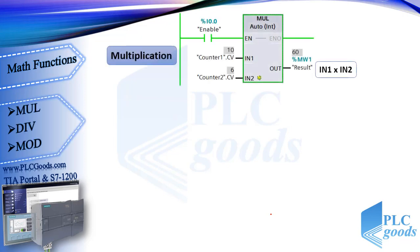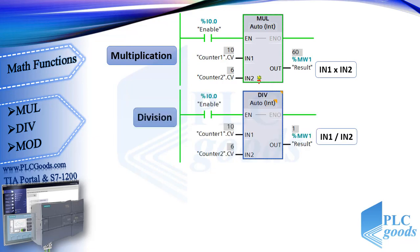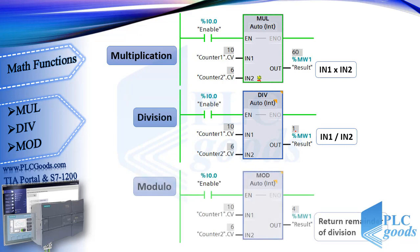Now let's see other functions in TIA software. This is the ladder symbol of the multiply instruction — this function multiplies 10 with 6 and stores 60 at MW1. As you see, this instruction can multiply more than 2 values. Next is division — this instruction divides 10 by 6 and returns its quotient. Next is MOD (modulo) — this instruction divides IN1 by IN2 and sends the remainder of the division to its output.